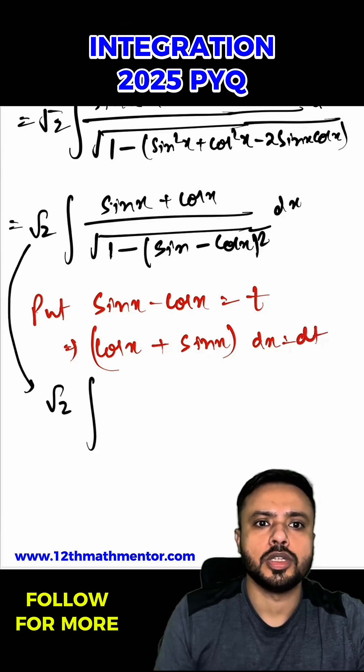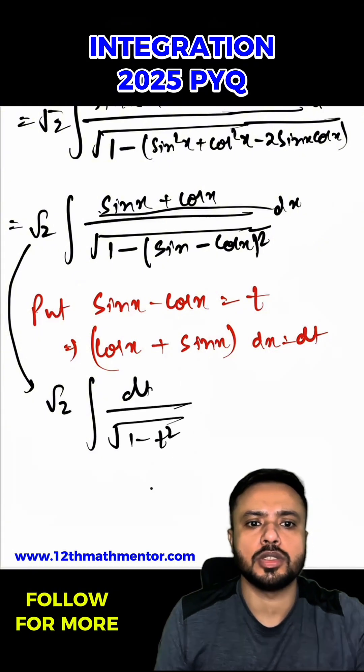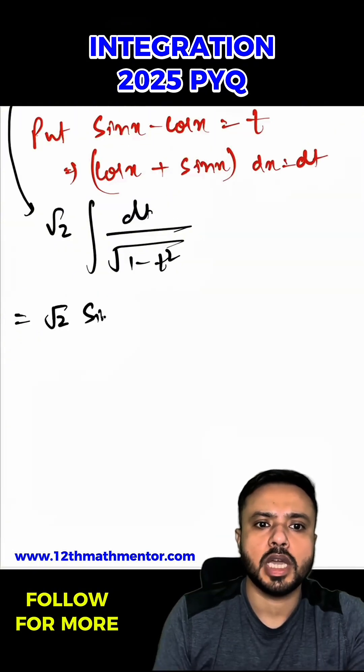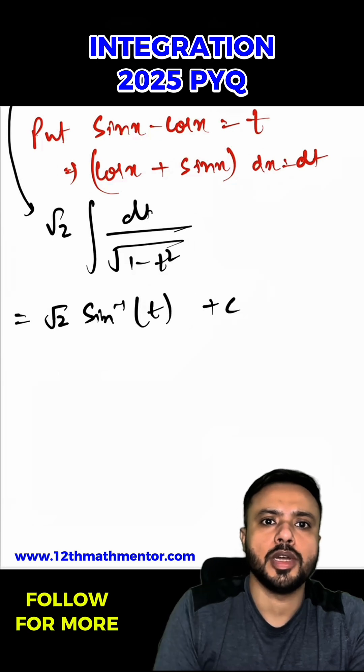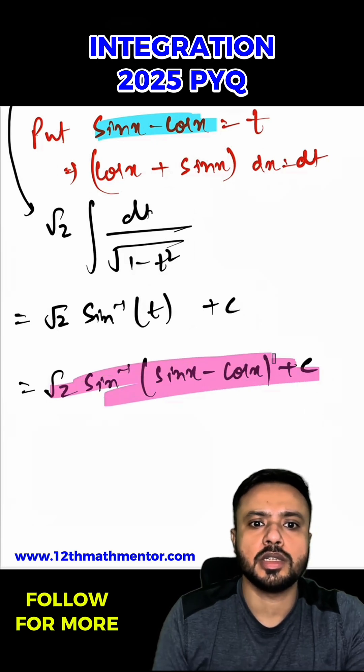So now I'm going to write this integral in terms of t as √2 dt/√(1 - t²). So it will be equal to √2 sin⁻¹(t) + C. And we had substituted the value of t as sin x - cos x, so I'll just put it back: √2 sin⁻¹(sin x - cos x) + C. So this is the desired answer for the asked integral.